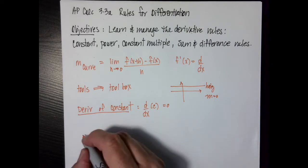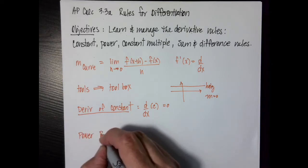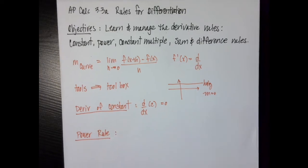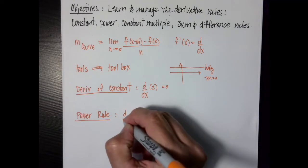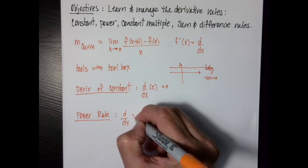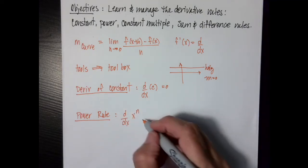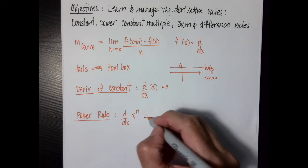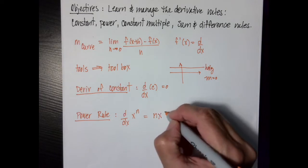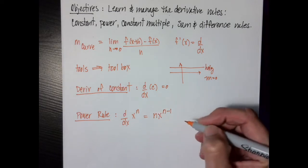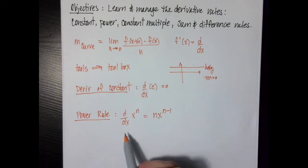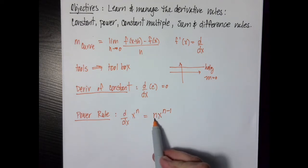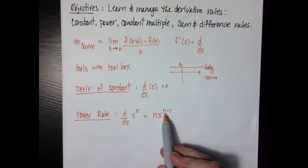The next one is called the power rule, and this is the one I have been using when we've been doing work to check the limit definition of a derivative. It looked like I knew some magic — in fact all I really knew was the power rule. If I have x raised to a power, the power goes out front, the x stays, and then the power decreases by one.